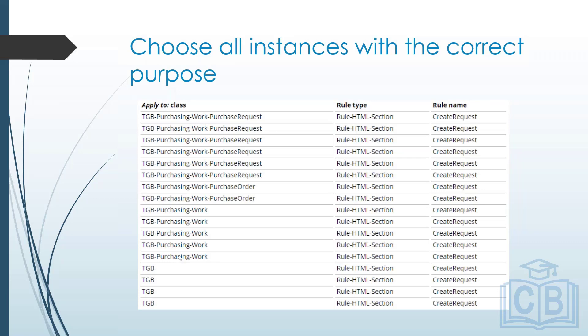This happens for each and every rule in your application — consider this example is just for one rule called Create Request. Imagine how many rules exist in an entire enterprise application. For rules already used multiple times, the rule candidate is already in the cache. For a newly created rule, the system goes through the full cache population and elimination process first.